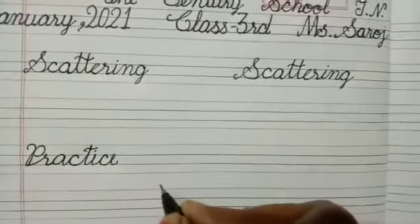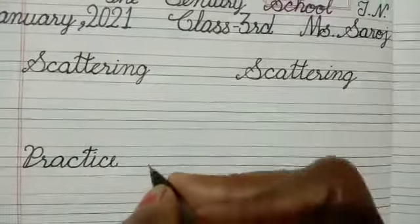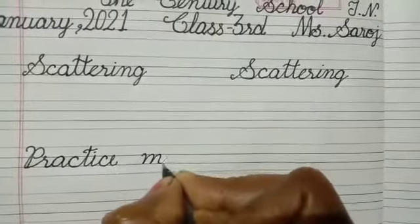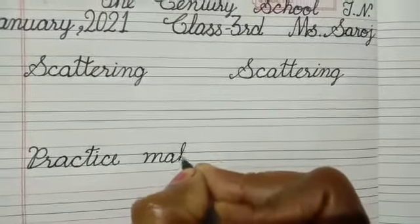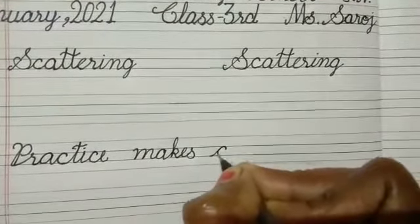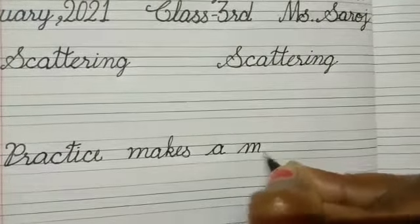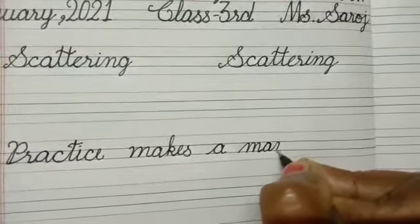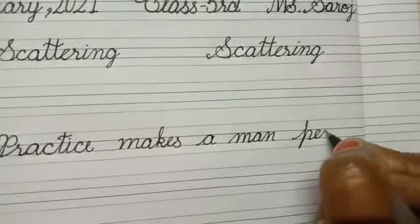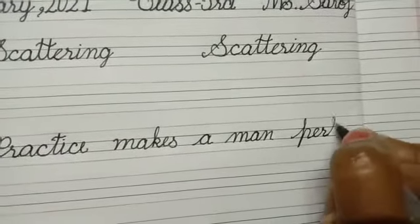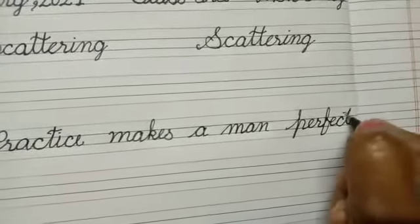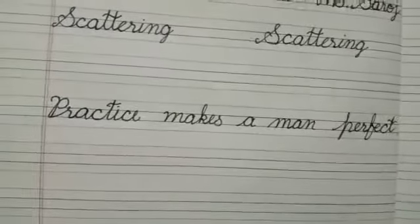After the word, take distance. Makes — M, A, K, E, S — makes a man. S — makes a man — perfect. Say the spelling of perfect: P, E, R, F, E, C, T — perfect.